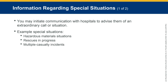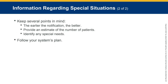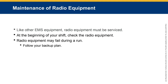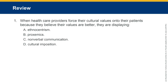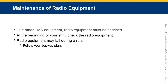Information regarding special situations: you may initiate communication with the hospital to advise them of an extraordinary call, such as a hazardous material situation, rescues in progress, or multiple casualty incidents. Key points: provide early notification, give an estimate of the number of patients, identify any special needs, and follow your system's plan. Maintenance of radio equipment: like other EMS equipment, radio equipment must be serviced. At the beginning of your shift, check the radio equipment. If radio equipment fails during a run, follow your backup plan.